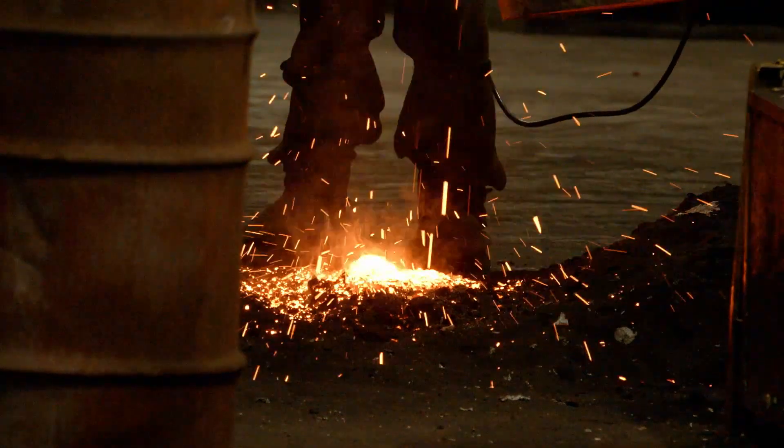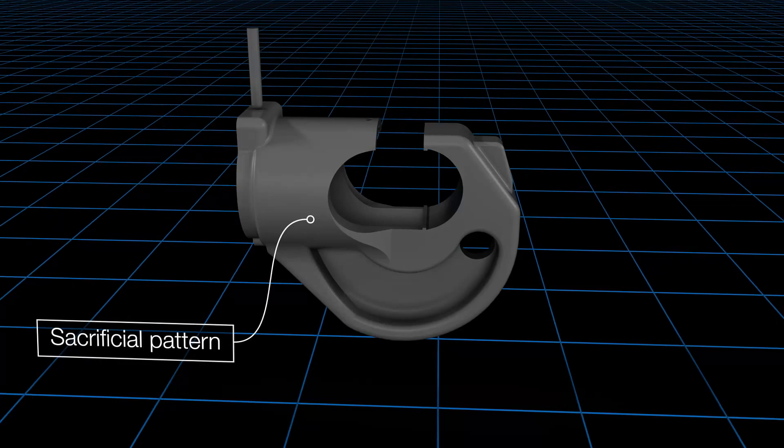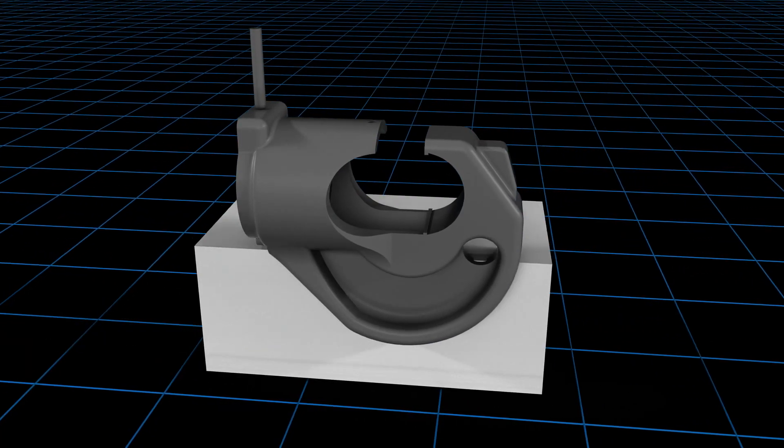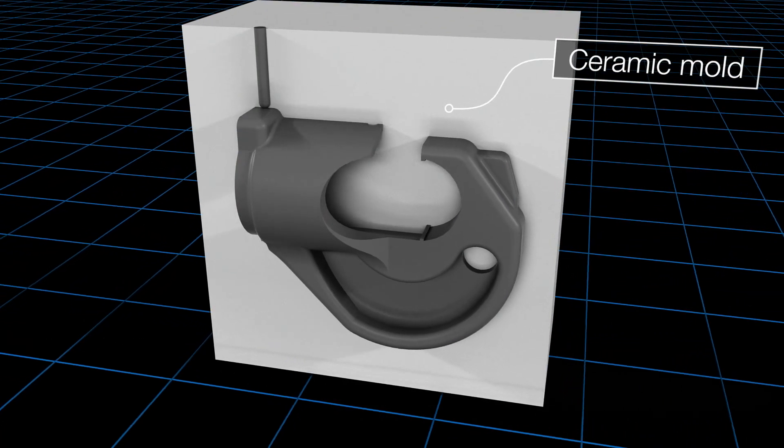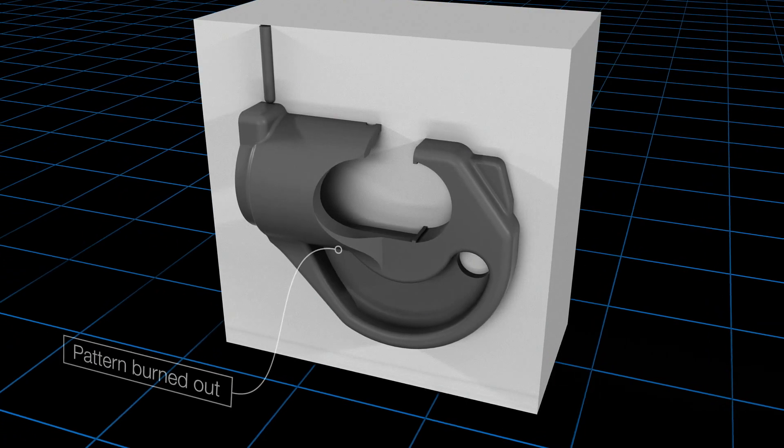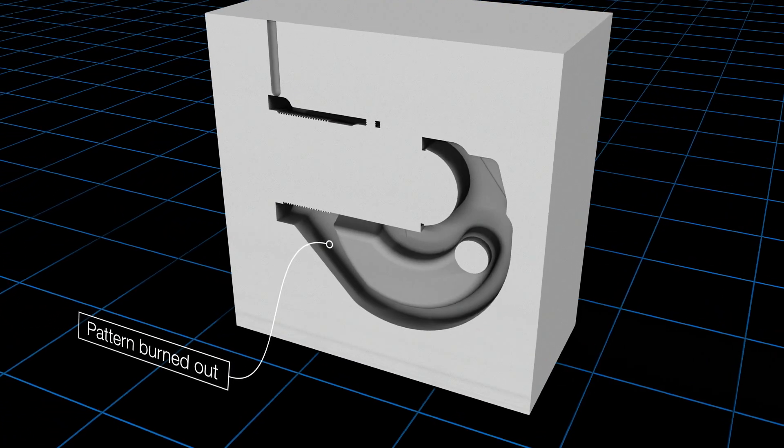Investment casting is a very traditional process of making metal parts. A pattern is created that's going to be sacrificial and then it's encased and dipped in ceramic, at which point then the whole assembly is put into a furnace and the pattern is burned out.